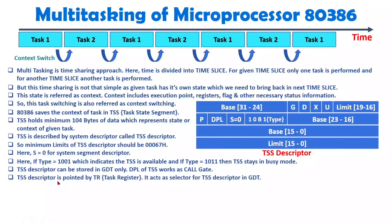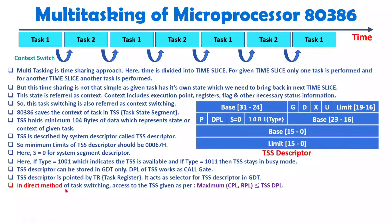For multitasking, there are two different methods. The first is the direct method. In the direct method of multitasking, access to the TSS descriptor happens as per the condition: maximum of CPL and RPL must be less than or equal to the TSS DPL. Here the current program privilege level or RPL maximum is the privilege level of the user to consider, and if it is less than or equal to the TSS DPL, then the user can use the TSS descriptor directly.